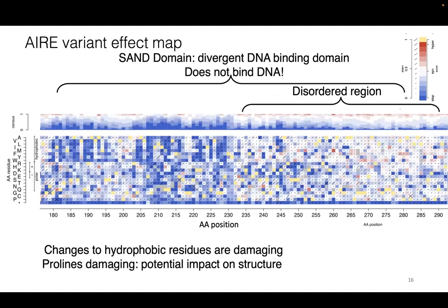Moving on there's the SAND domain, which is a divergent DNA-binding domain. There was debate in the literature about whether AIRE is a transcription factor that binds DNA or a coactivator that doesn't, and current literature says it's not binding DNA because the SAND domain is divergent and an alpha-helix change prevents DNA localization. This domain is interesting because it interacts with other proteins — you can see a patch of hydrophobic residues where changes look damaging, while in the disordered region the protein is more tolerant of variation.